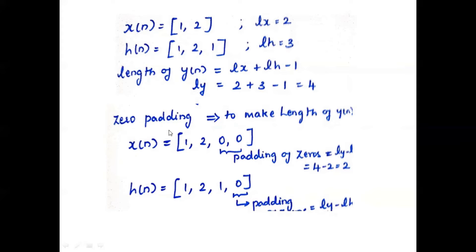A very important step here is zero padding. For both sequences we have to pad zeros to make the length equal to the length of Y of n. X of n is padded with zeros — the number of zeros is LY minus LX, which is 4 minus 2 equal to 2. For H of n, the padding is LY minus LH, which gives 1 zero.